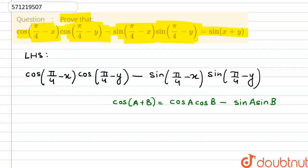So here, if we compare this to this, our a is pi by 4 minus x and our b is pi by 4 minus y. Similarly, here also we have the same value.